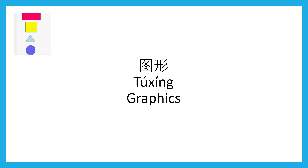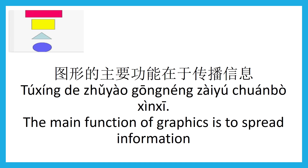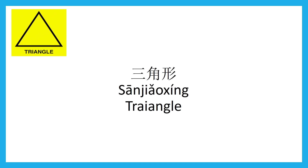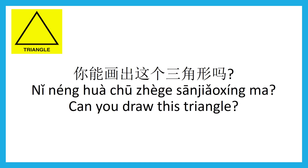Graphics — 图形 (túxíng). 图形, 图形. The main function of graphics is to spread information — 图形的主要功能在于传播信息 (túxíng de zhǔyào gōngnéng zàiyú chuánbō xìnxī). Triangle — 三角形 (sānjiǎoxíng). 三角形, 三角形. Can you draw this triangle? — 你能画出这个三角形吗 (nǐ néng huà chū zhège sānjiǎoxíng ma)?